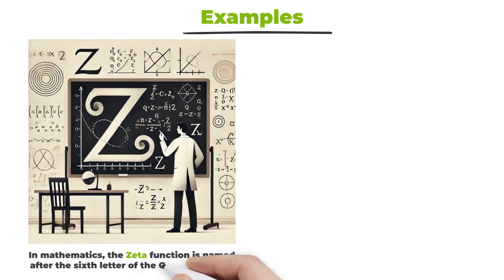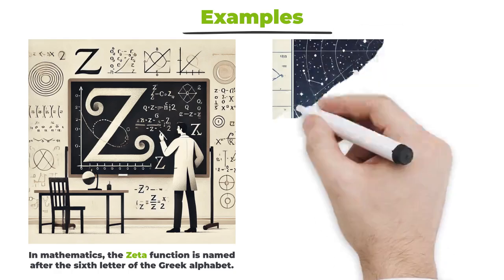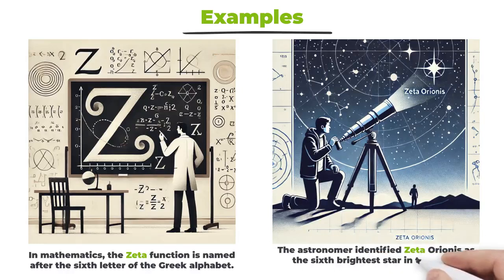Let's see how Zeta can be used in different contexts. In mathematics, the Zeta function is named after the sixth letter of the Greek alphabet — here, Zeta refers to its use in mathematical theories. The astronomer identified Zeta Orionis as the sixth brightest star in the Orion constellation, highlighting its meaning in astronomy.